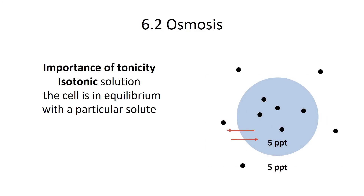If you're in an isotonic solution, your cell is in equilibrium with a particular solute. 'Iso' means the same, and tonicity means the amount of solutes in the water. A cell in an isotonic solution doesn't have to do any work to maintain its cell size because the net water movement in and out of the cell is essentially zero.